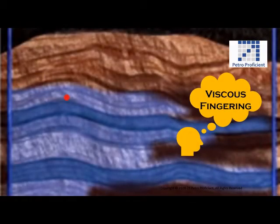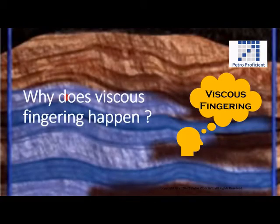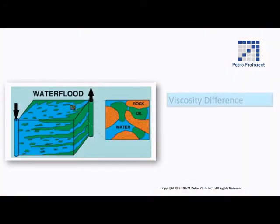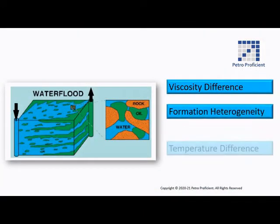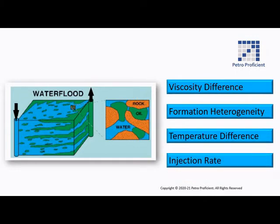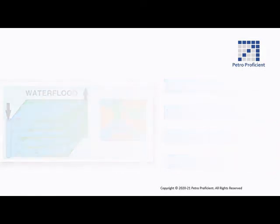Why does viscous fingering happen? Viscous fingering can happen because of differences in viscosity ratio, formation heterogeneity, temperature difference, and difference in injection rate.